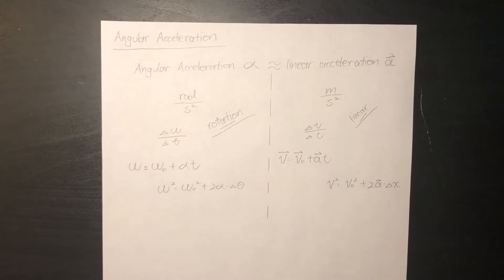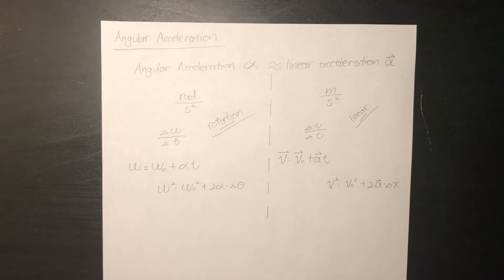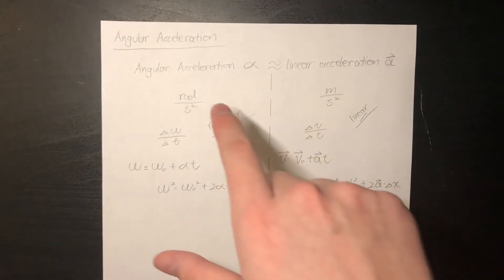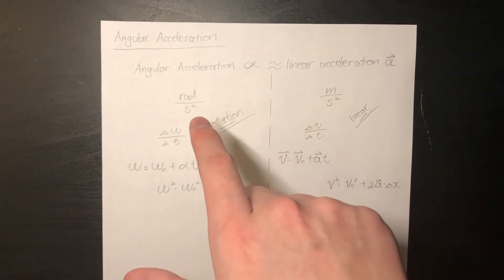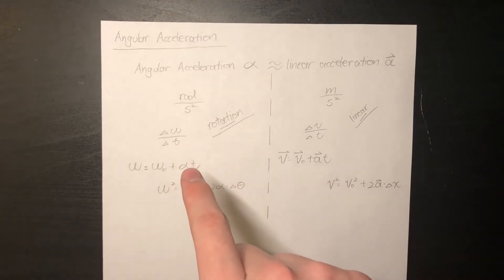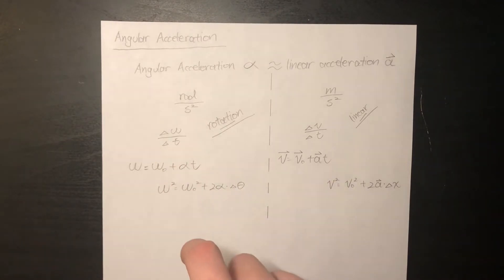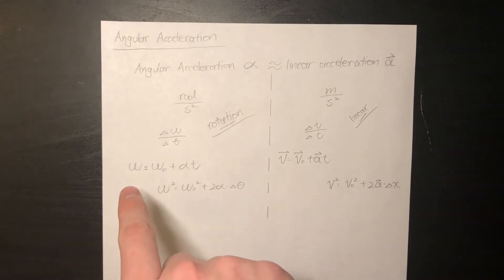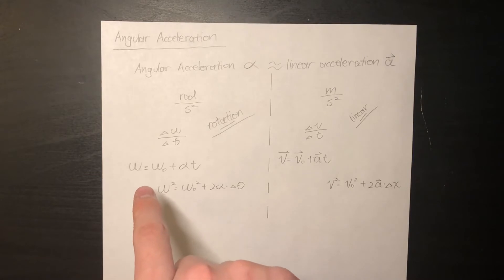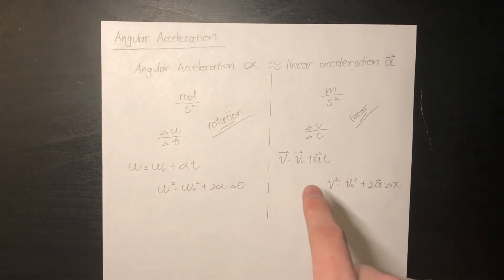The next concept in rotational dynamics is angular acceleration. Angular acceleration is often represented using the symbol alpha, and is similar to linear acceleration, but instead of meters per second squared, we have radians per second squared. Angular acceleration measures the change in angular velocity of a rotating object over time. You can make a direct reference between the angular acceleration equation and the linear acceleration equation.